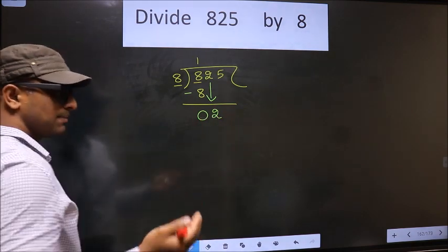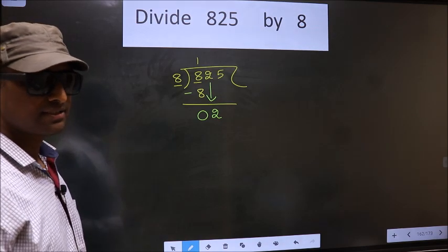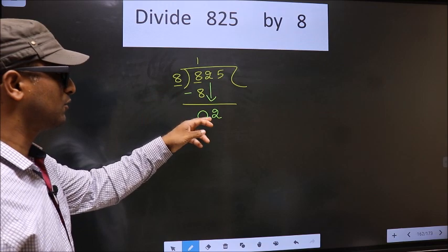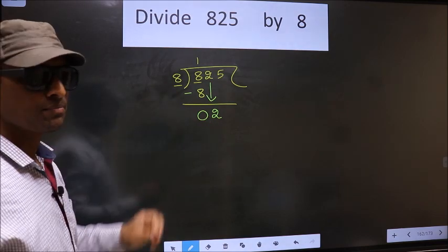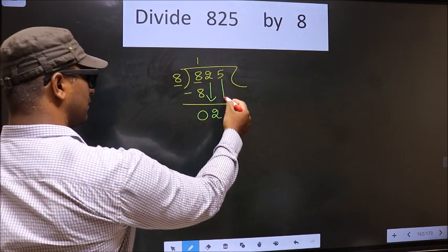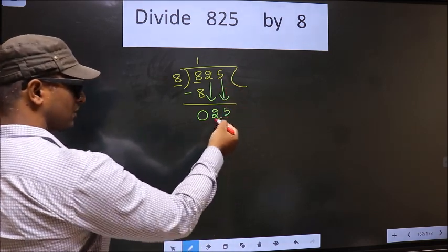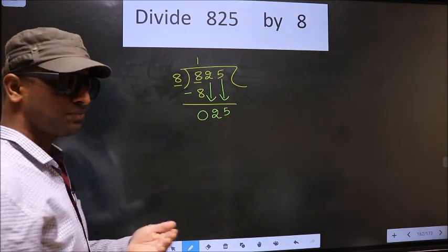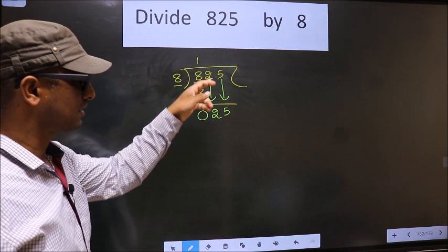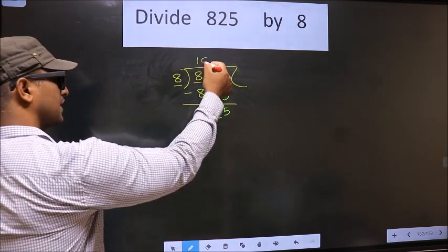This is where the mistake happens. And the mistake is this. Here we have 2. Here 8. 2 is smaller than 8. So what many do is they directly bring down the other number. So 5 down. Over here, whenever you are bringing down 2 numbers, then compulsory put 0 in the quotient.